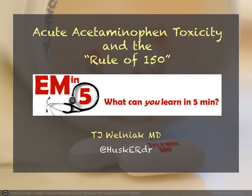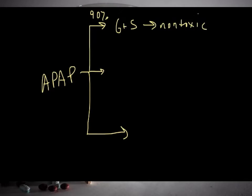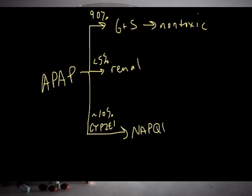First we have to understand how acetaminophen is metabolized in the body. This is done in a few different ways. About 90% of the drug is metabolized by way of glucuronidation and sulfonation, in which small subgroups are attached to the drug in the liver and excreted without further issue. A very negligible portion is excreted unchanged renally. About 10% goes through the cytochrome P450 pathway, utilizing the CYP2E1 enzyme to create a metabolite known as NAPQI.